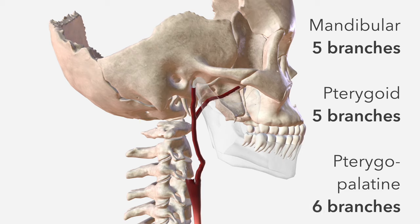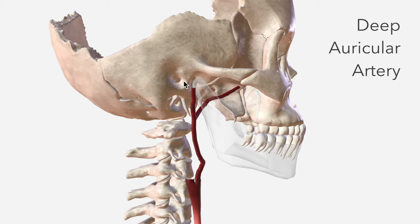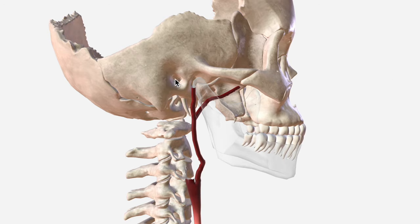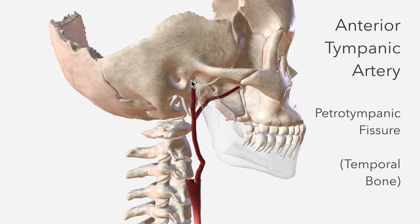The first two branches of the maxillary artery aren't included in this model because they're so small. Those first two branches are the deep auricular artery, which departs to supply the external acoustic meatus — this passage in the temporal bone — and the anterior tympanic artery, which departs from the proximal maxillary and heads through the petro-tympanic fissure in the temporal bone, a very small slit or fissure in that bone, to be transmitted to the middle ear where it supplies the tympanic membrane.